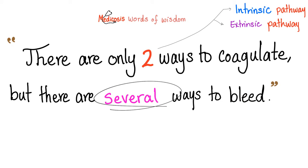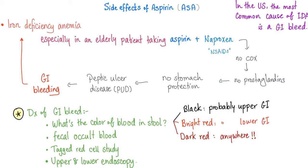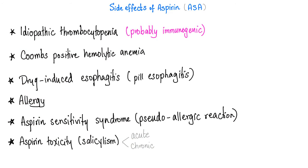Aspirin can cause hyperthermia or fever because it's an uncoupler. Aspirin can lead to iron deficiency anemia due to GI bleed. Aspirin can lead to idiopathic thrombocytopenia, Coombs-positive hemolytic anemia, drug-induced esophagitis, allergy or sensitivity syndrome, and salicylism — aspirin toxicity.